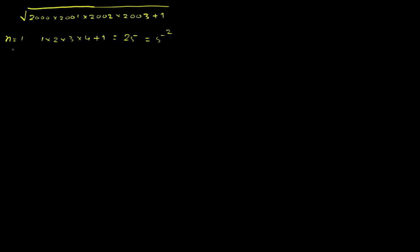For n equal to 2, this can be written as 2 times 3 times 4 times 5 plus 1, which equals 120 plus 1 equals 121. And 121 is 11 squared.